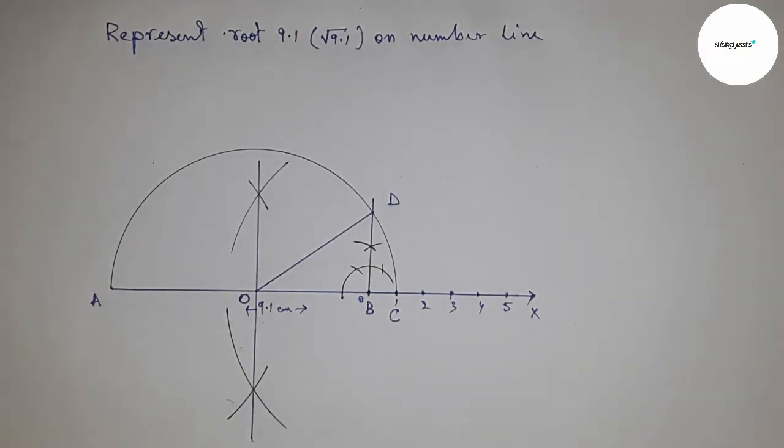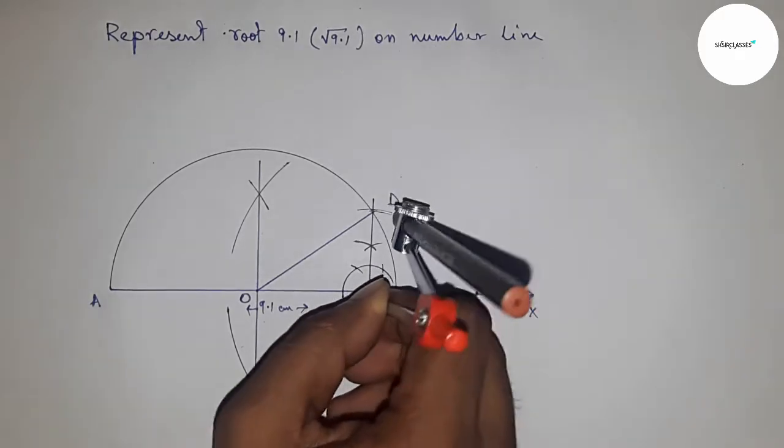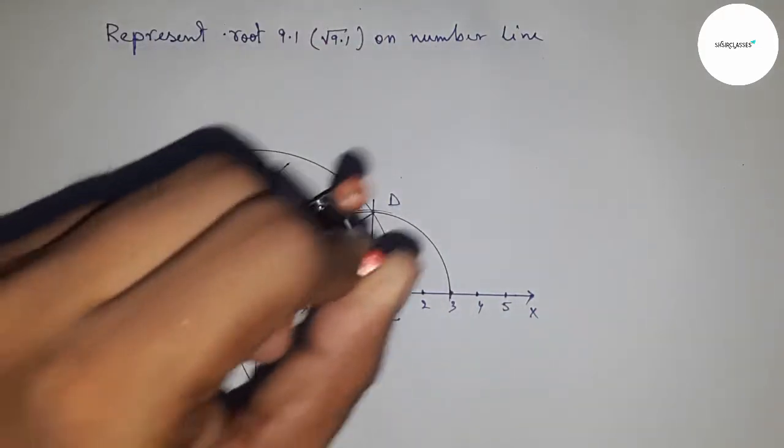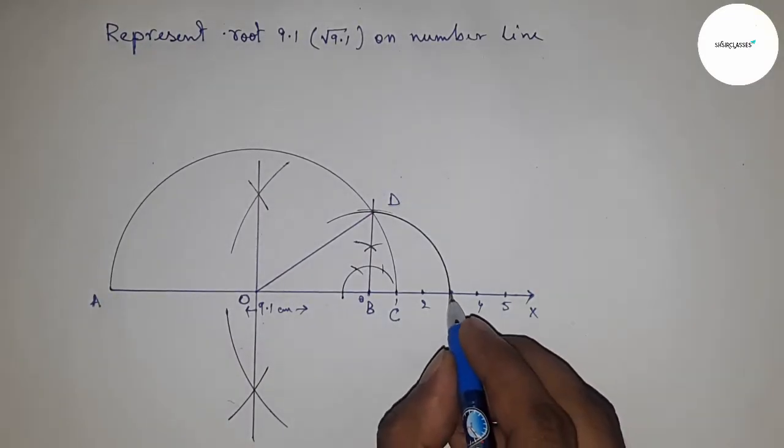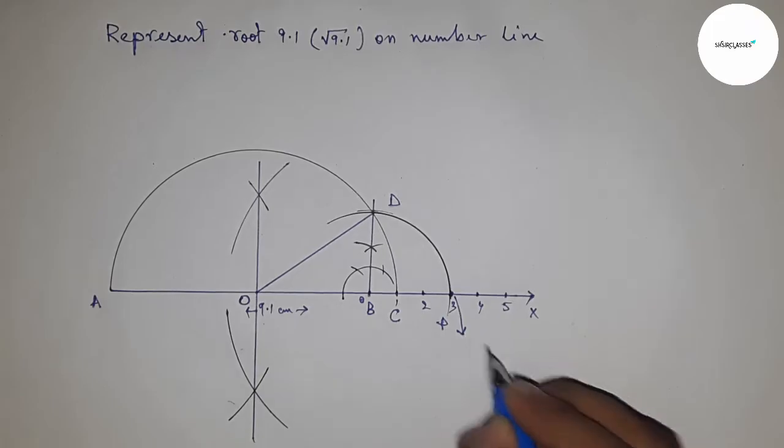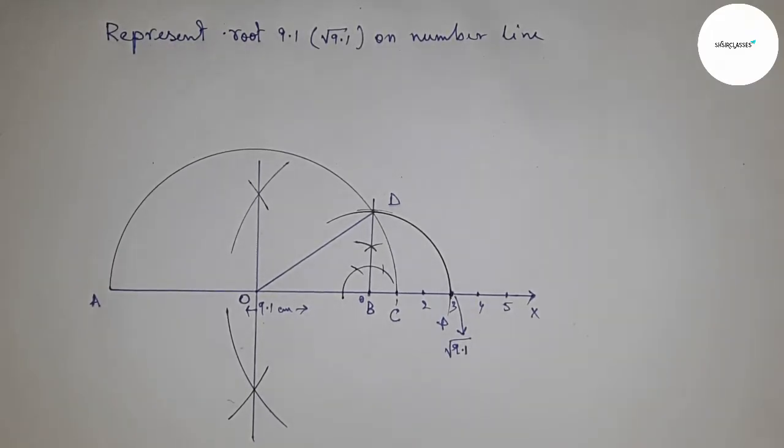Next, take the radius BD with the compass and draw an arc which cuts the number line at point P. This is the representation of root 9.1 on the number line.